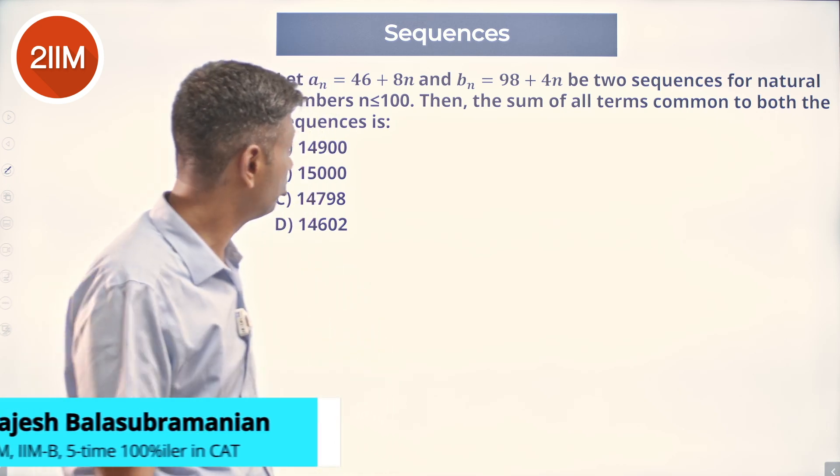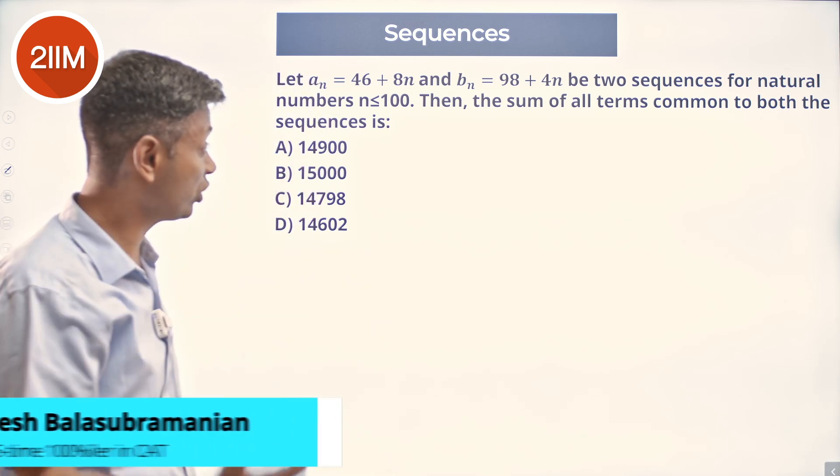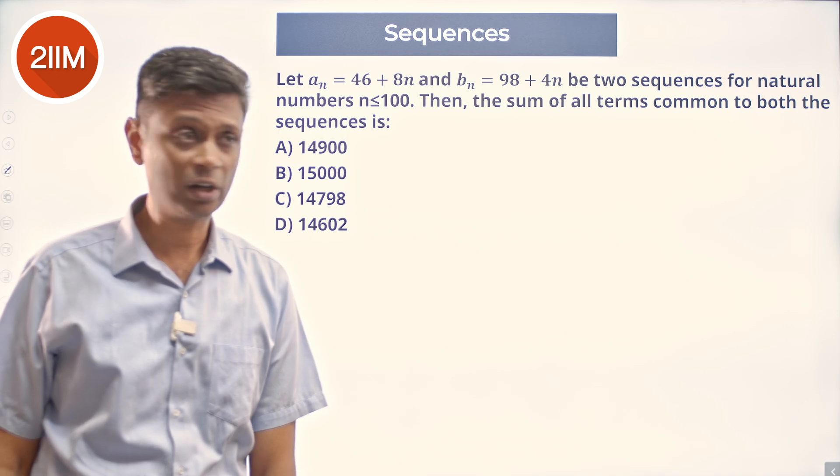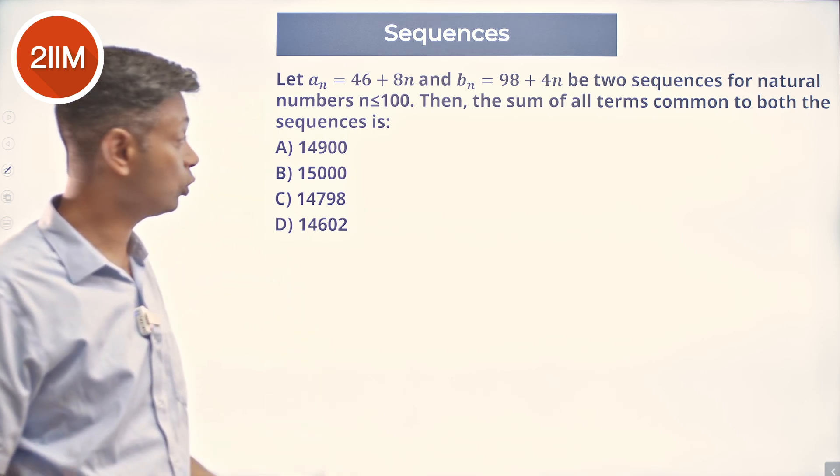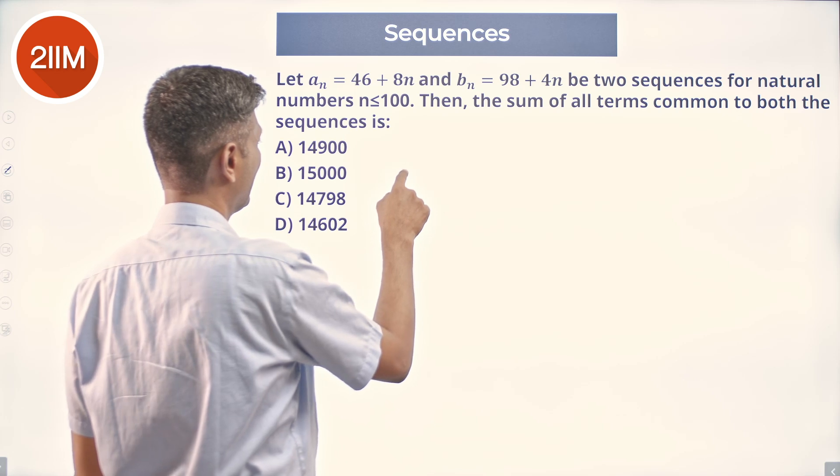a_n equals 46 plus 8n, b_n equals 98 plus 4n, two sequences for natural numbers n less than or equal to 100. Then the sum of all terms common to both the sequences.